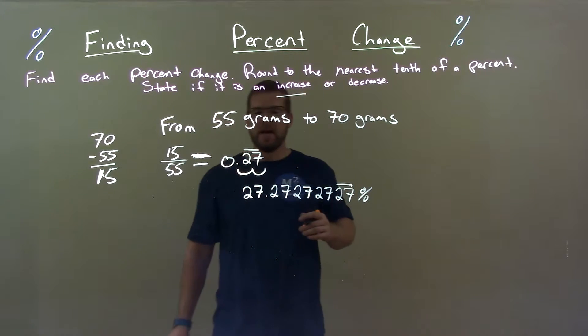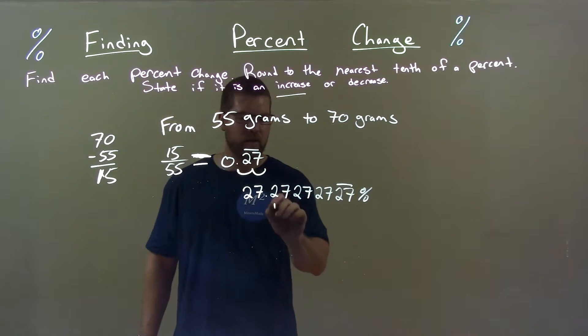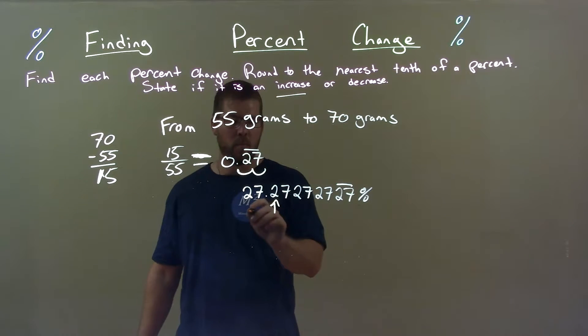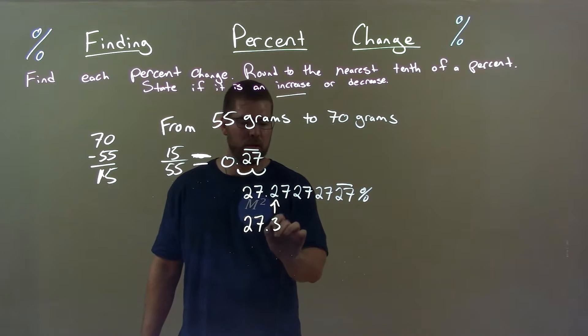Gotta round that to the nearest tenth. Look at the two. Seven causes two to go up by one. 27.3 percent.